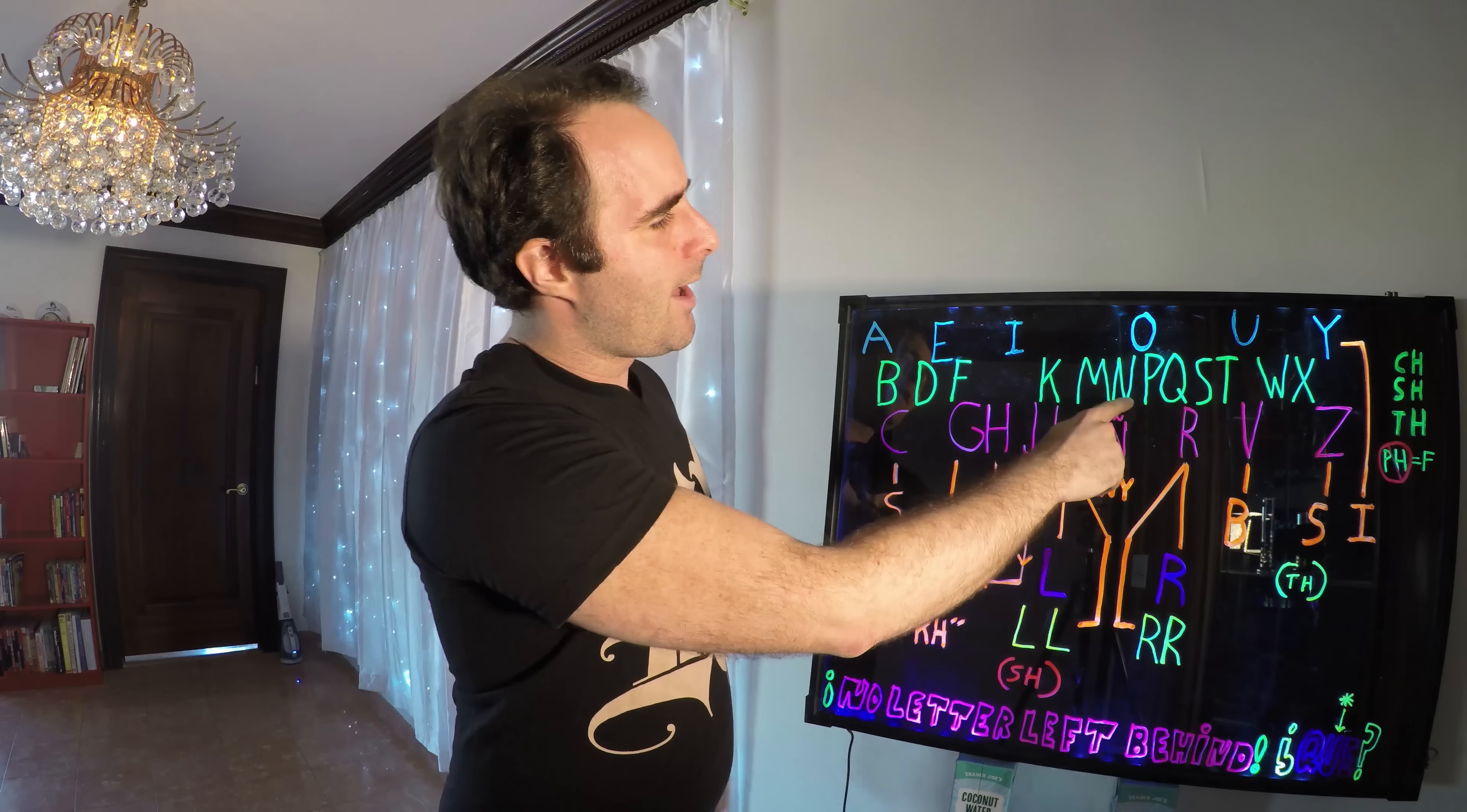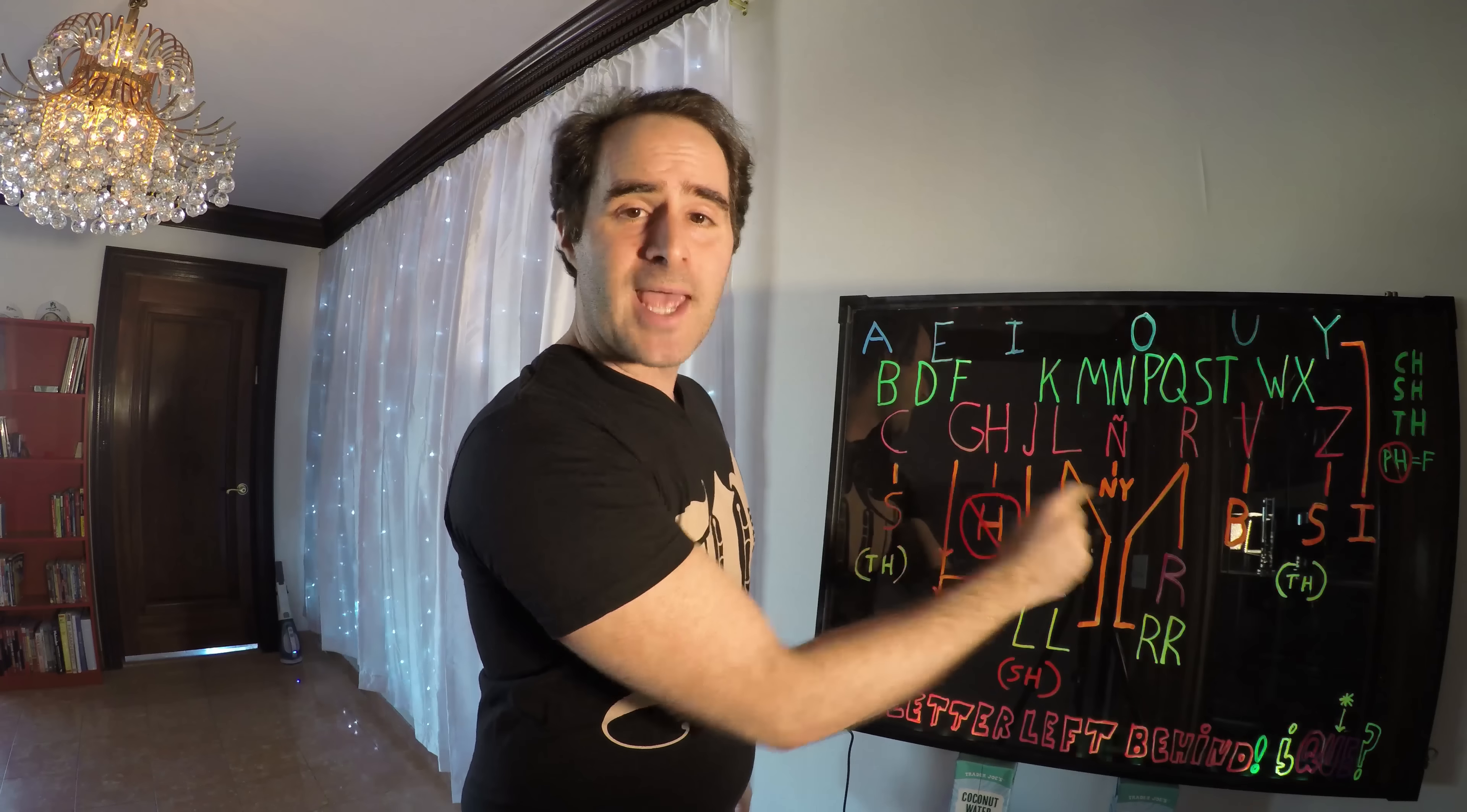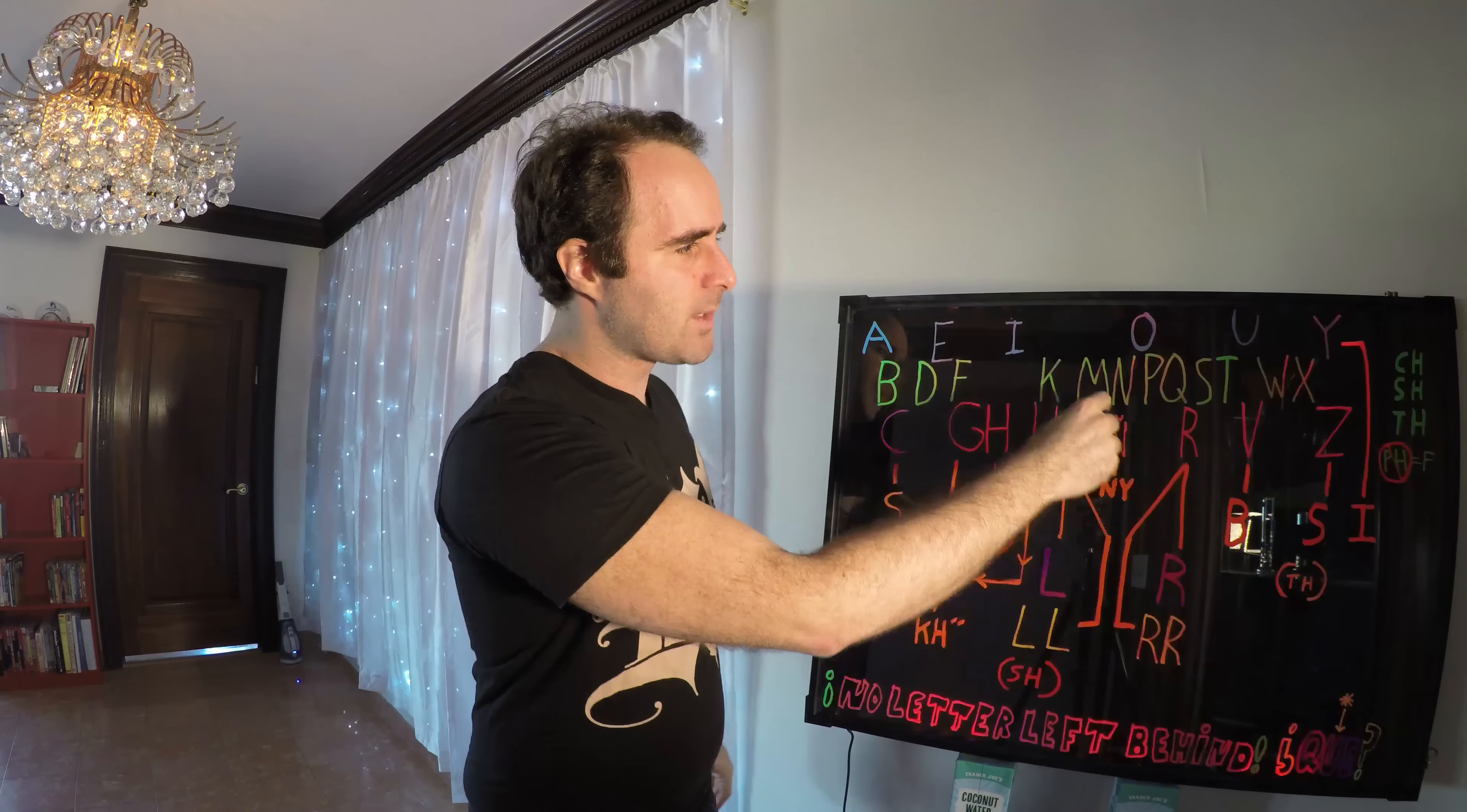Next word, N. Regular N is a regular N. N with that little squiggly is basically like the letters N and Y together. So nya, basically. Nya, nya, nya. That's it. Just add a Y. When you see the squiggly, just pretend that's a little Y that falls right in front of it.